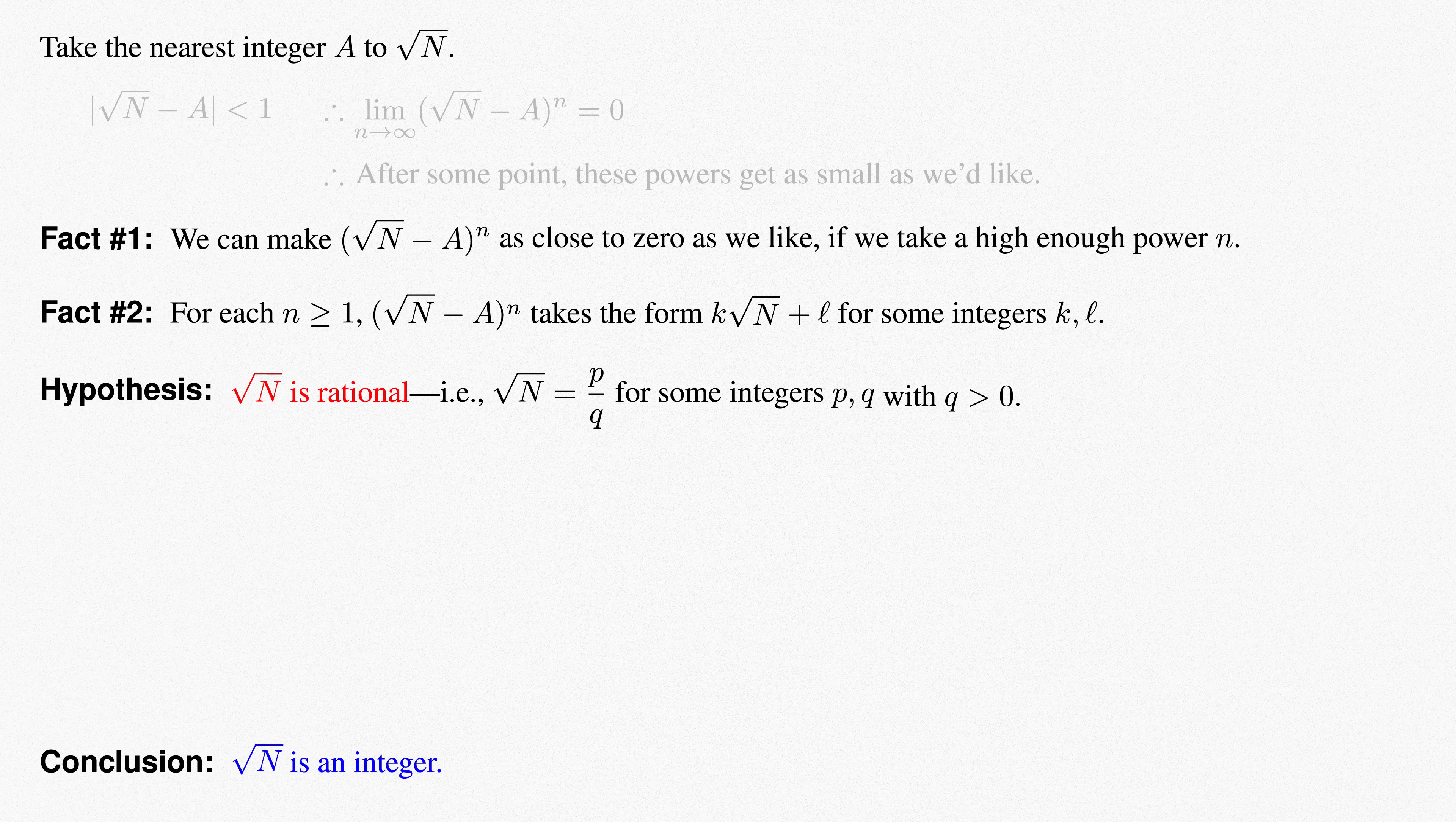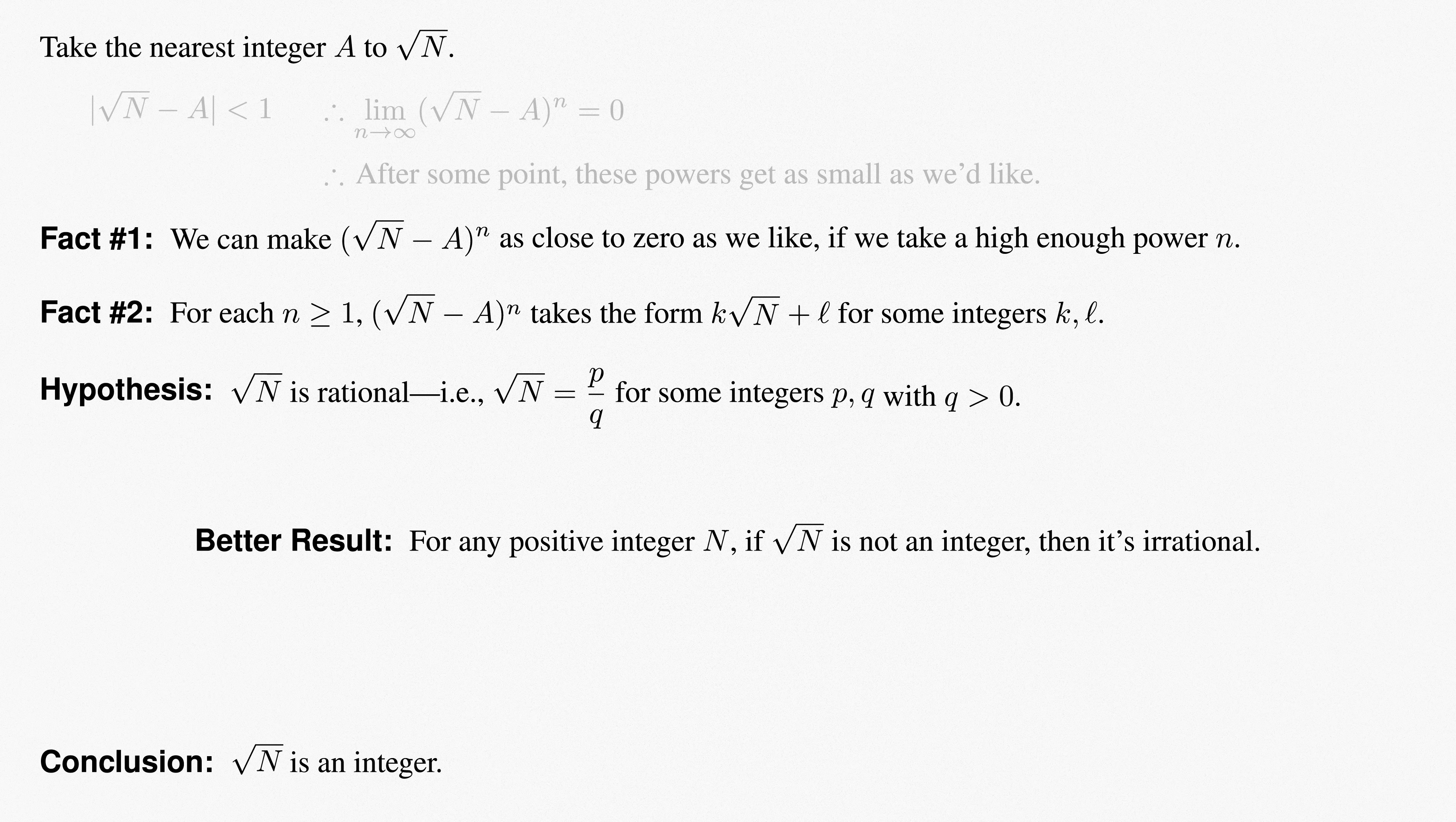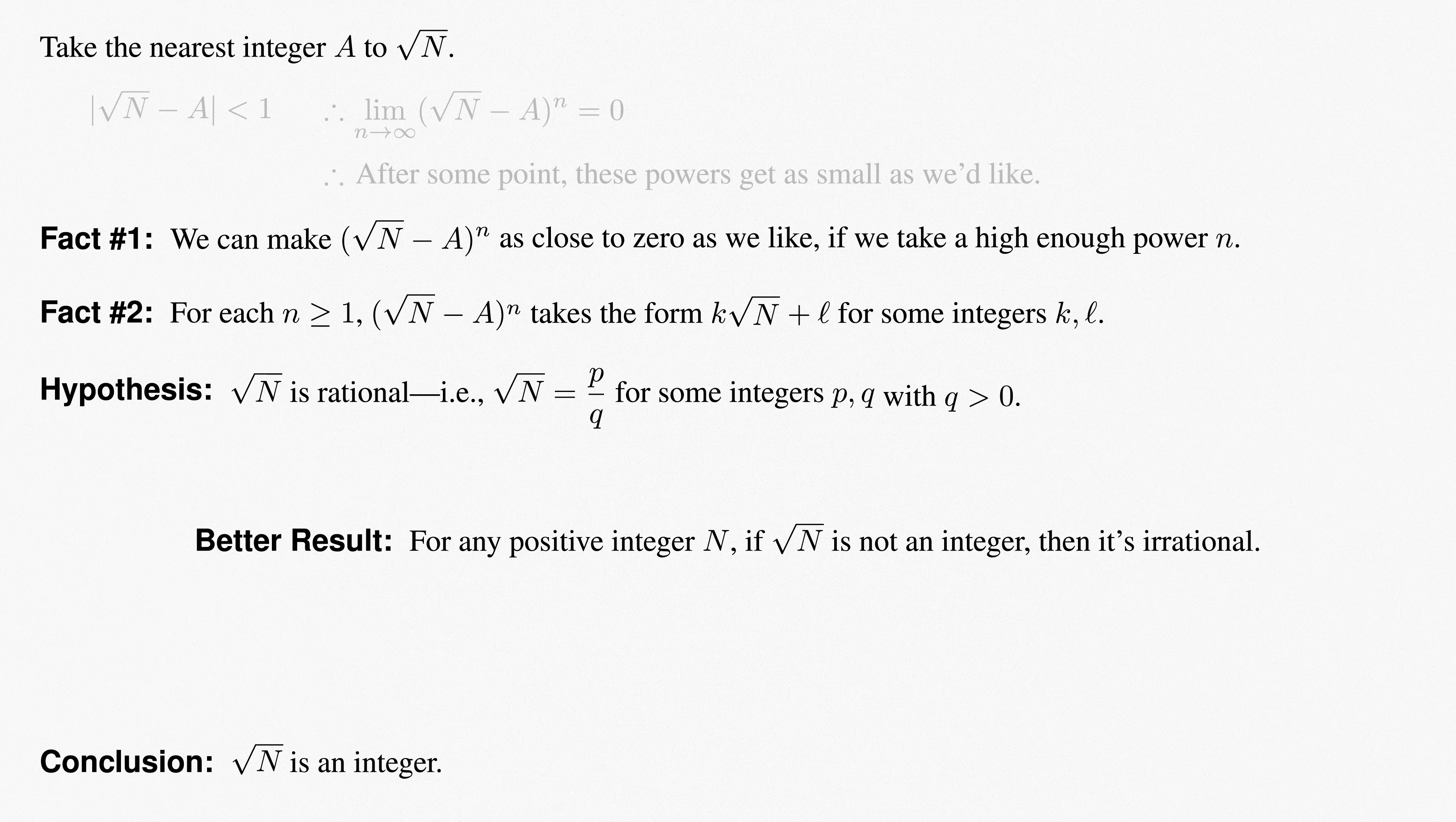As with our first result, this is more useful in its contrapositive form. If root n is not an integer, then root n is irrational. In other words, the only rational square roots of integers are the integral ones. This allows us to very quickly prove irrationality of lots and lots of square roots, because there simply aren't many integers to check. Integers aren't so densely packed as rational numbers.